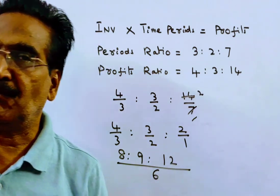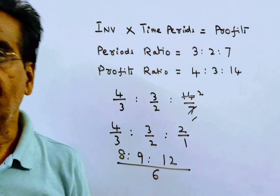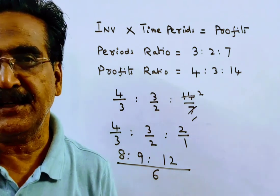So 8 is to 9 is to 12 is the ratio of their investment. Friends, thank you.